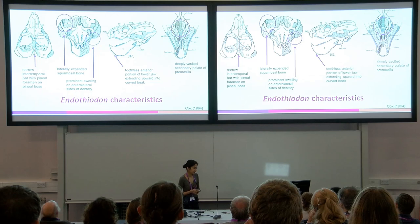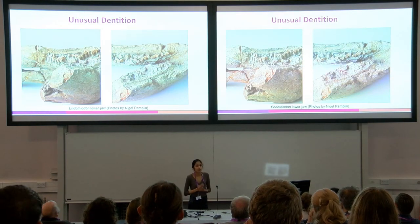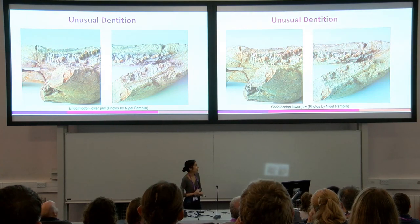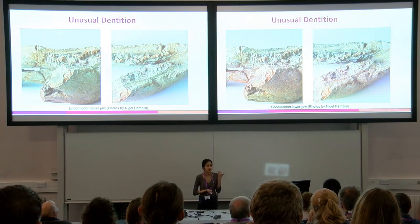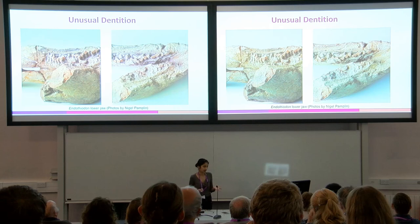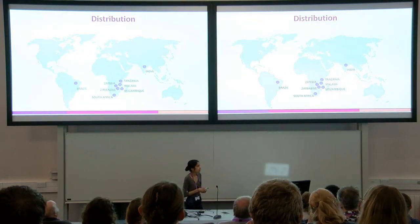The most unique feature of Endothiodon is its dentition, which consists of rows of internal teeth in the upper and lower jaws that are organized in replacement waves called zandrine.